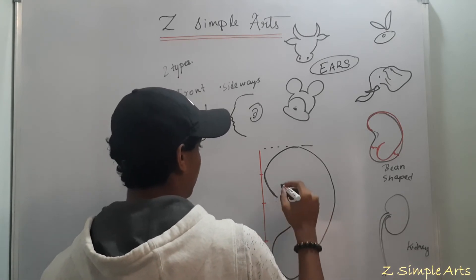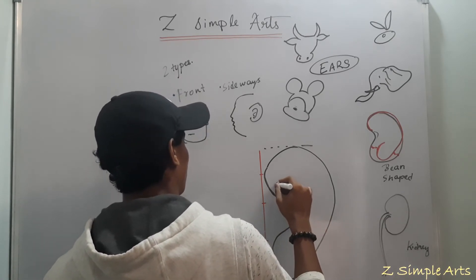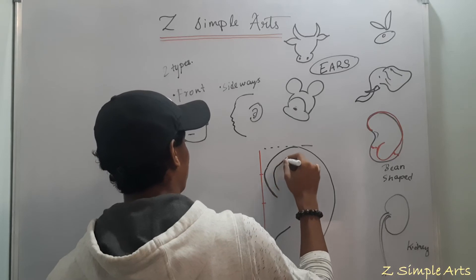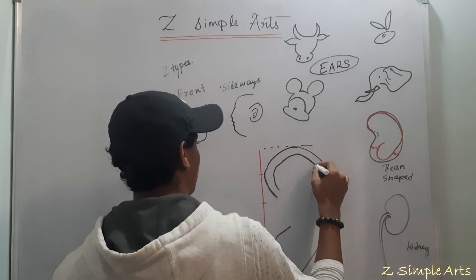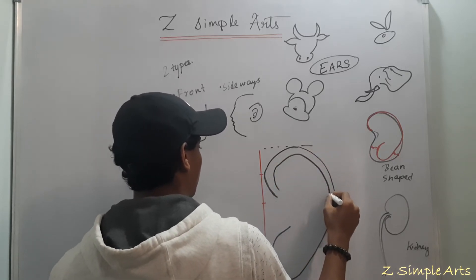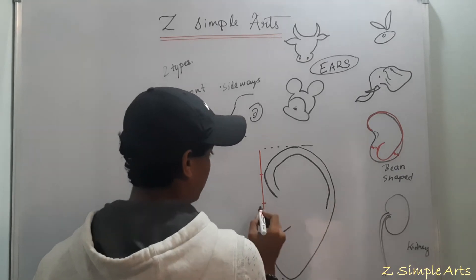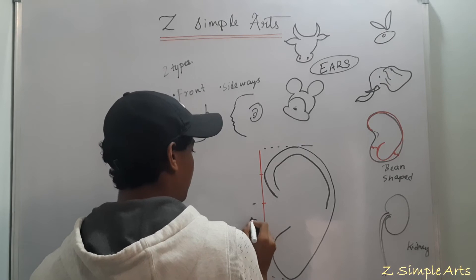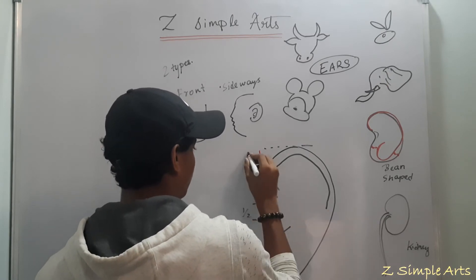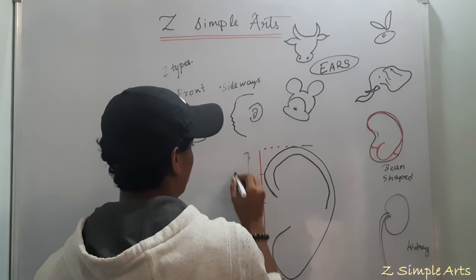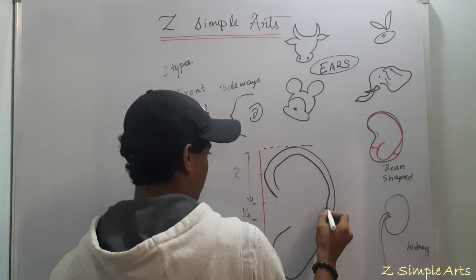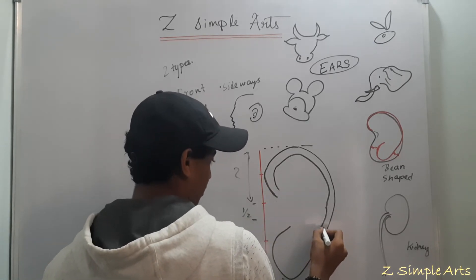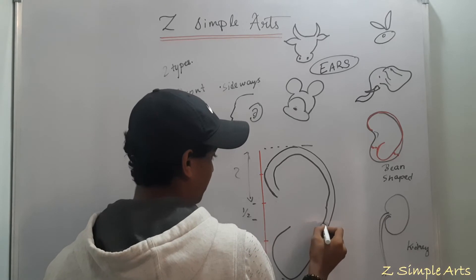And later you have to draw parallel line. As you can see, I am just drawing a parallel line. Till the second part you have to draw the parallel line. And till the half, extend. So totally, we are extending the parallel line to two and half part.